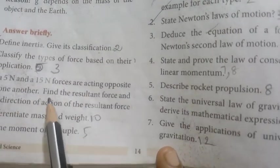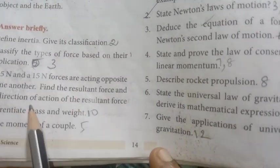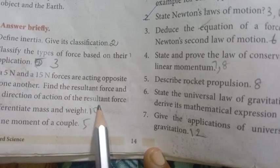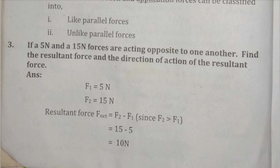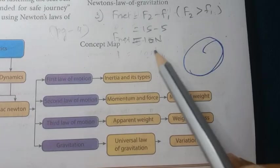Third: if five newton and fifteen newton forces are acting opposite to one another, find the resultant force and the direction. The resultant force will be in the direction of the greater force — 15 newton. The direction of action of the resultant force will be along the 15 newton force.